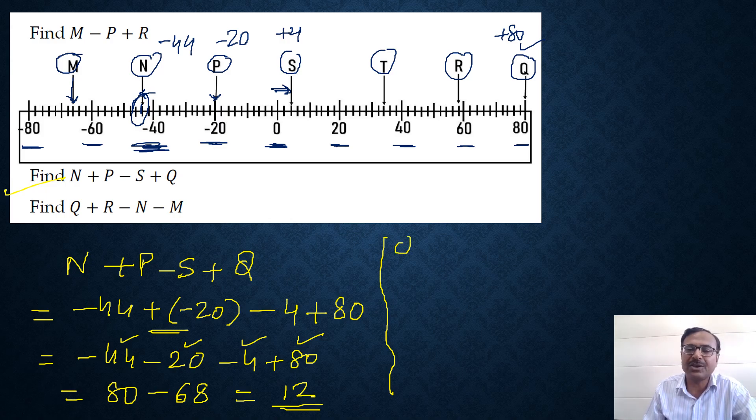You can see another part there: Q plus R minus N minus M. Let us write all the values. Q we already know, plus 80. R we do not know. R is 1 unit towards the left of 60, so that is plus 58. N is minus 44 already. M is 3 units towards the left of minus 60, so minus 66. Only one value is left, T, which is 3 units towards the left of 40, so that is plus 34.